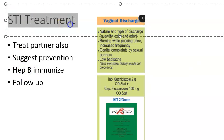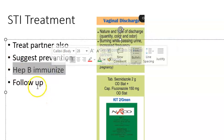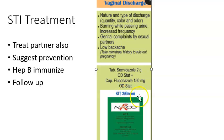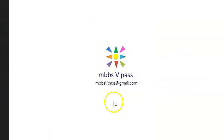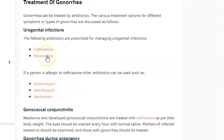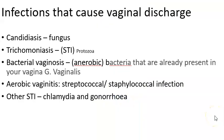For STI treatment generally: treat the partner as well, advise prevention (condoms, abstinence), suggest hepatitis B immunization, and arrange follow-up. For gonorrhea, ceftriaxone and doxycycline are suggested. There are STI kits available, such as Kit 2 (green kit) containing secnidazole and fluconazole. This video has covered all major infections causing vaginal discharge and their treatments.